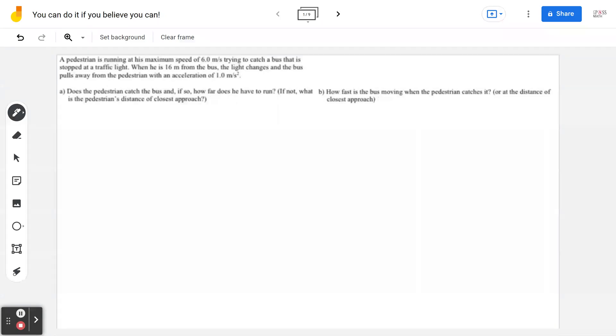Part A: Does the pedestrian catch the bus and if so, how far does he have to run? If not, what is the pedestrian's distance of closest approach? Part B: How fast is the bus moving when the pedestrian catches it or at the distance of the closest approach?